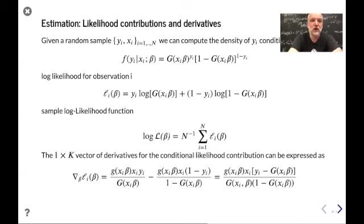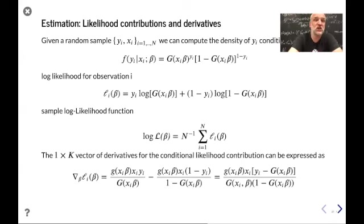We are now in the second step, having verified the conditions necessary to obtain identification in a binary response model — linear index models such as probit and logit. This is what we're going to do now.